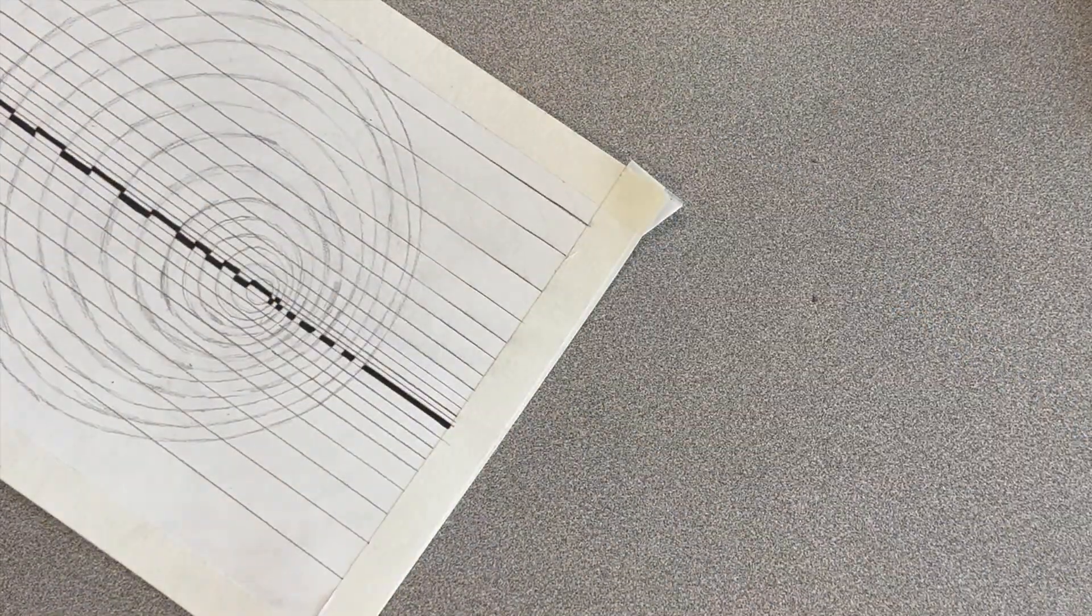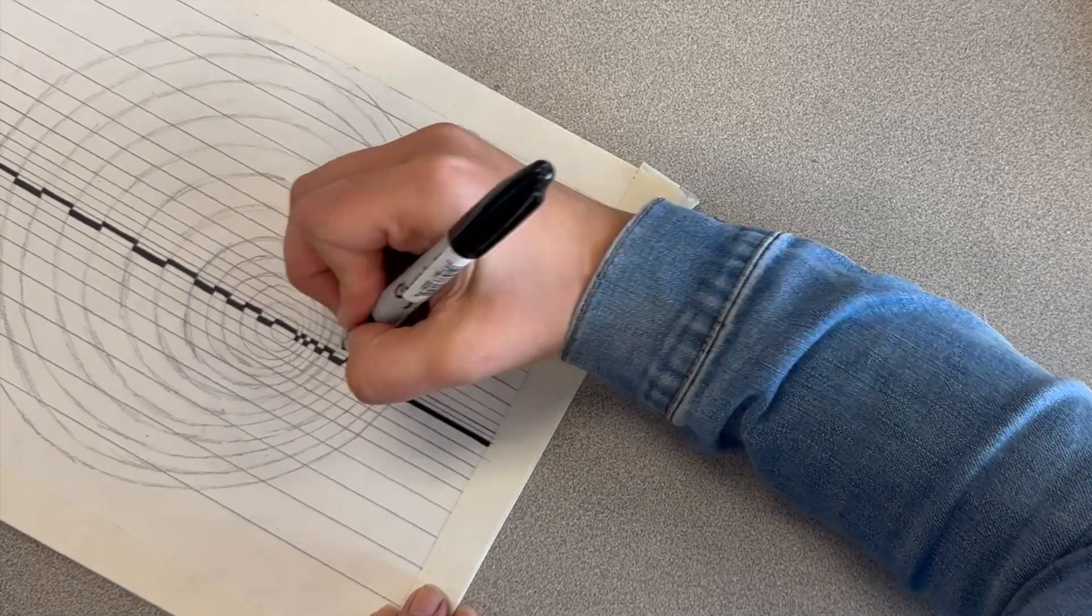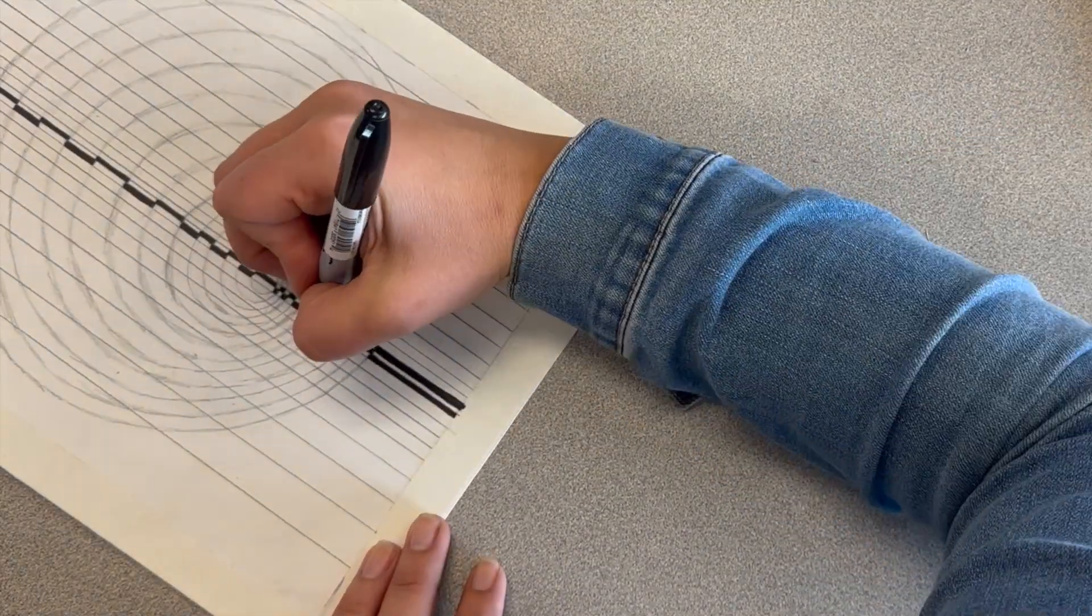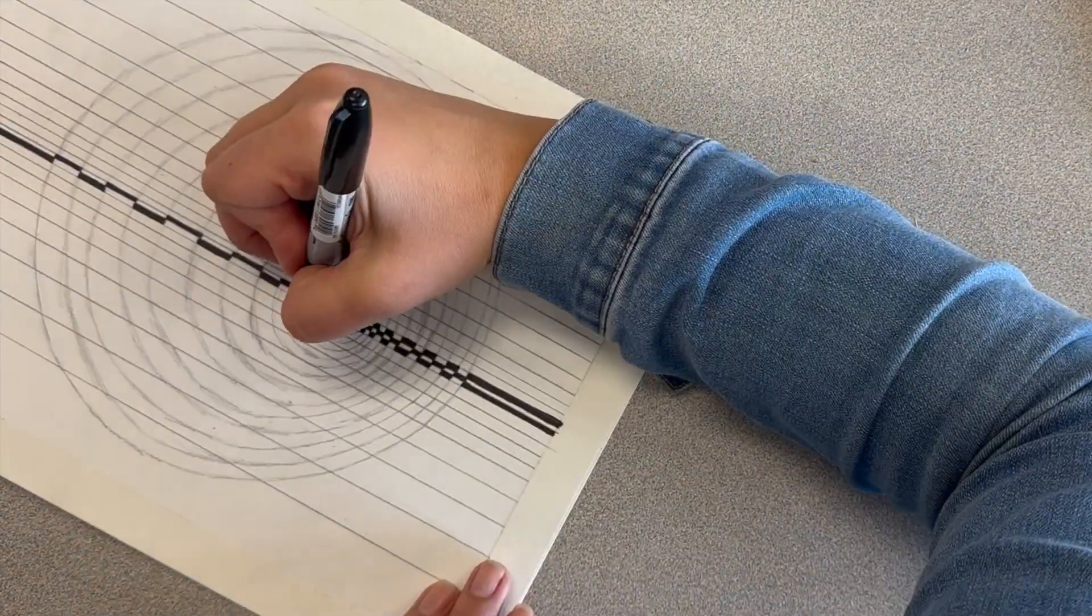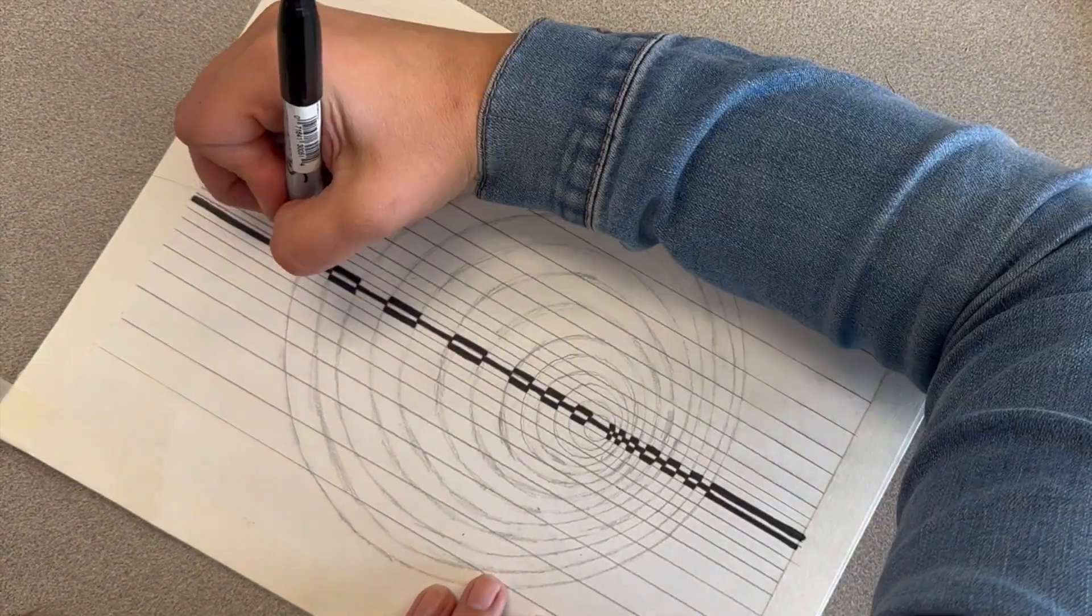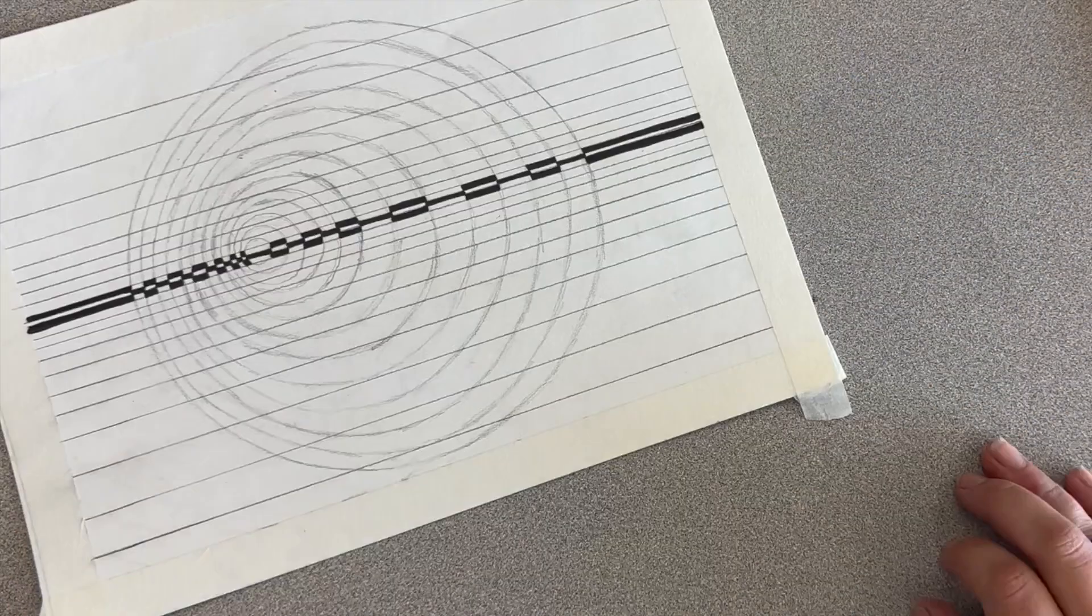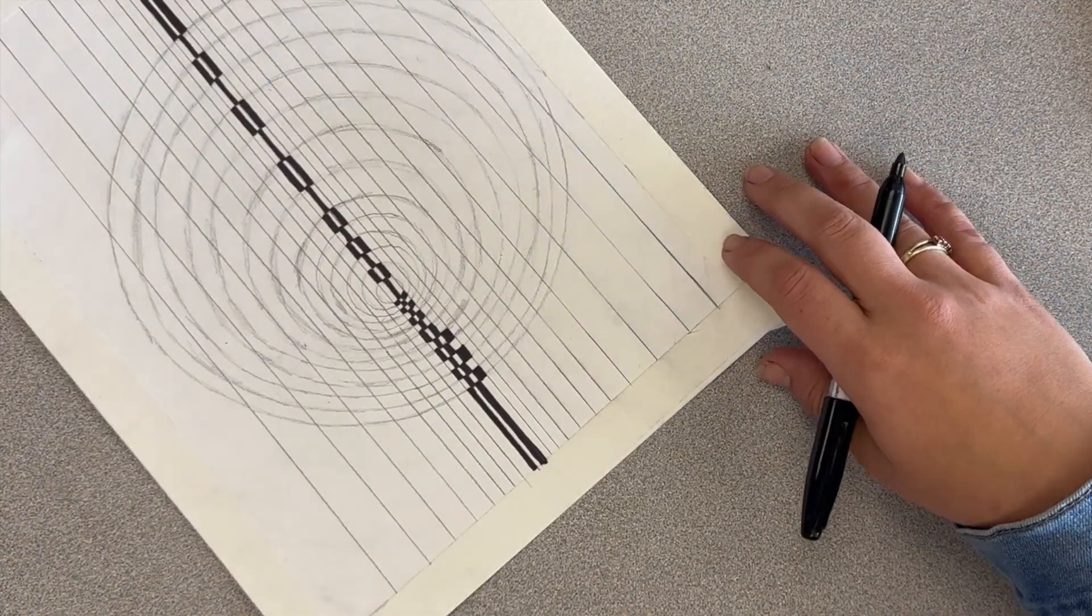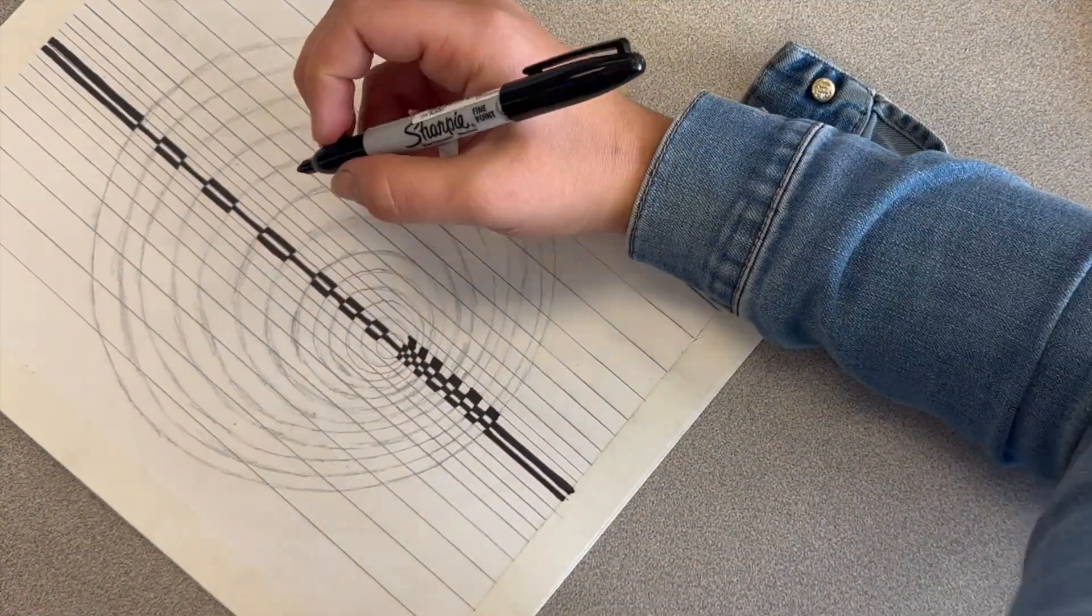I would recommend either working top to bottom or bottom to top, but you need to make sure that you are working one line at a time. With this design, it's going to get tricky on the edges of the circles, and if you do not work one line at a time, then it's not going to show up as an illusion when your work is finished. You need to really take your time and make sure we are going one line at a time.